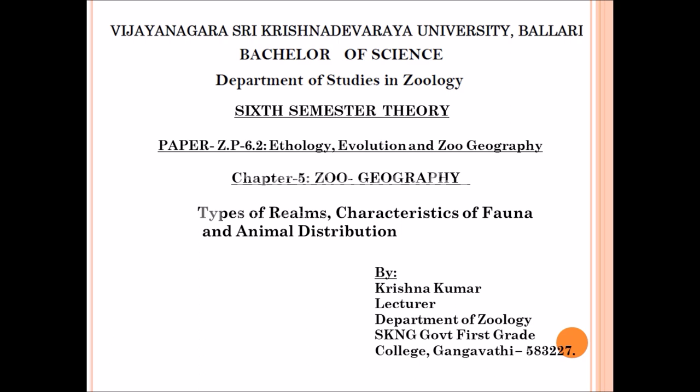In this session, we will discuss about the 6th semester 6.2 paper, that is Ethology, Evolution and Zoogeography. In that, the 5th chapter is Zoogeography. And we will discuss about types of realms, characteristics of fauna and animal distribution. So let's start.